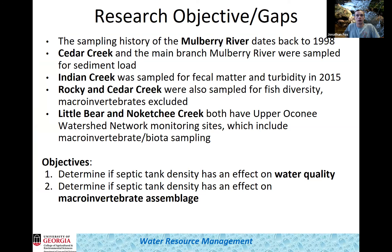The sampling history of the Mulberry River is pretty unique — it dates back to 1998. Cedar, Indian, and Rocky Creeks have been sampled for various things, but none of them have ever been sampled for macroinvertebrates. The two creeks outside the watershed — Little Bear and Nocatchee — are on the Upper Oconee Watershed network and have been monitored for both water and macroinvertebrates. I chose them because they offer a similar range of septic tank density, are close to access points, and are about the same size as the other creeks.